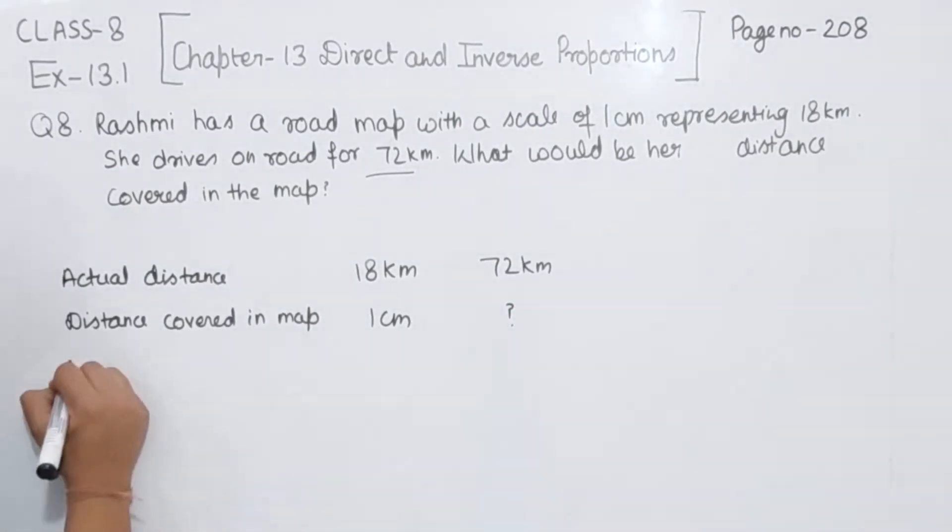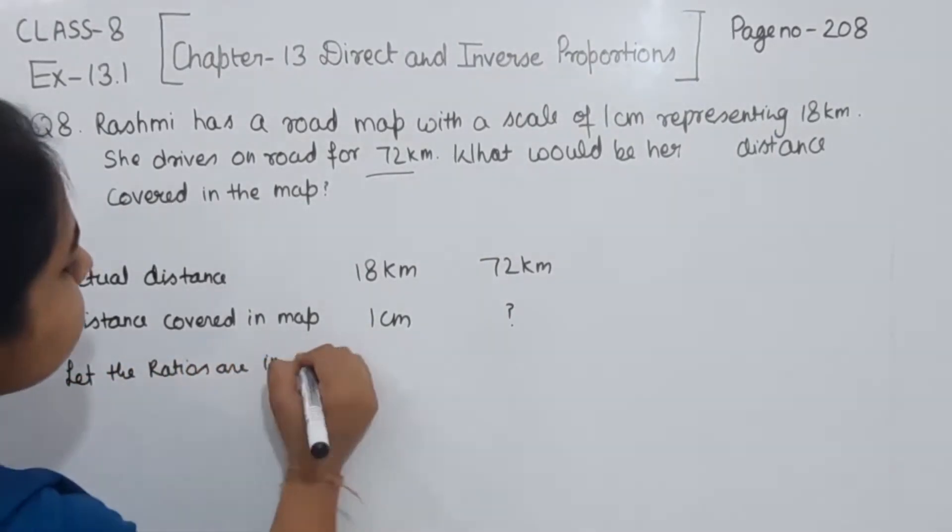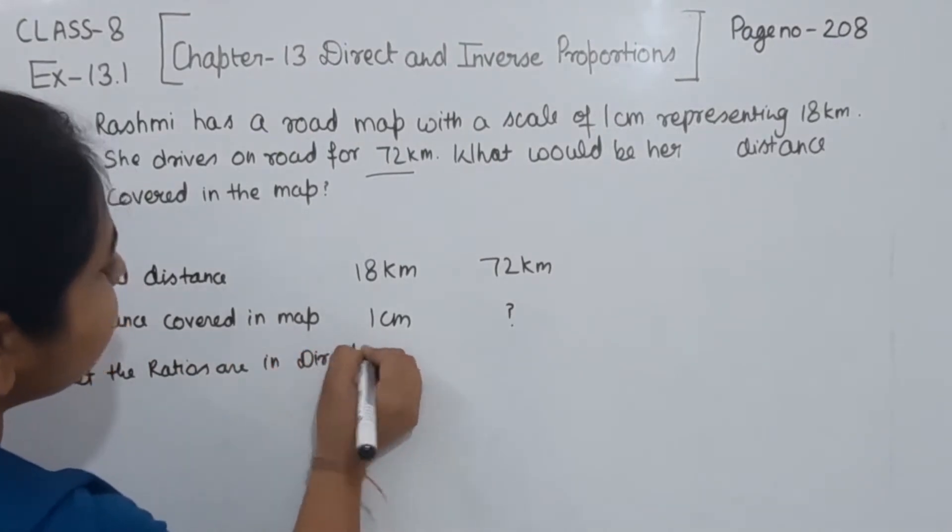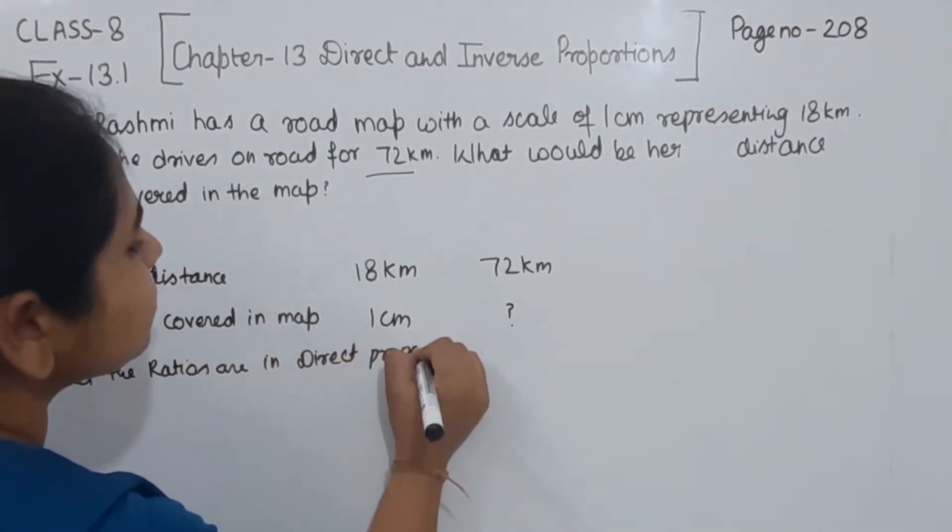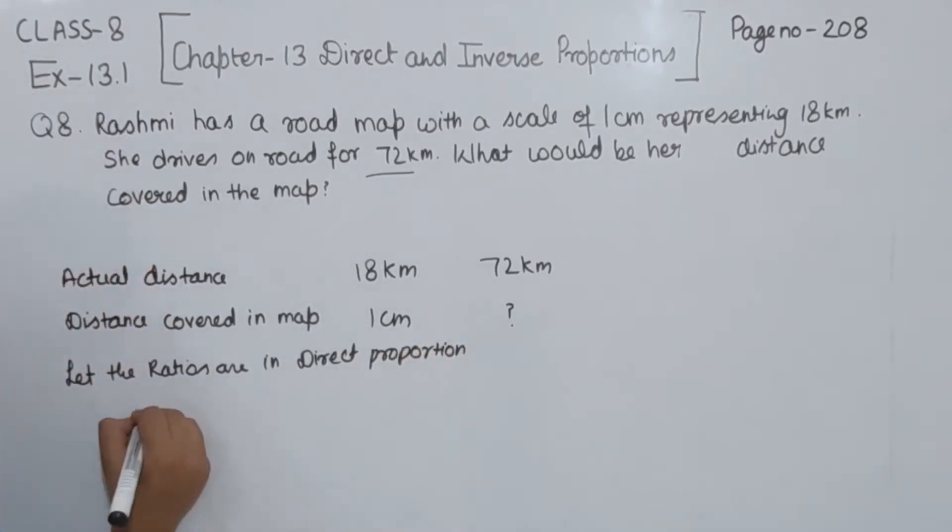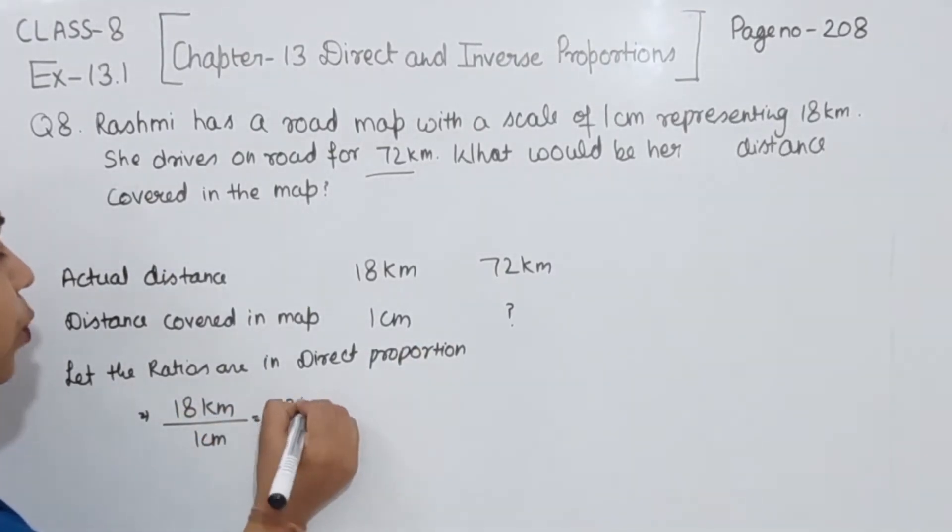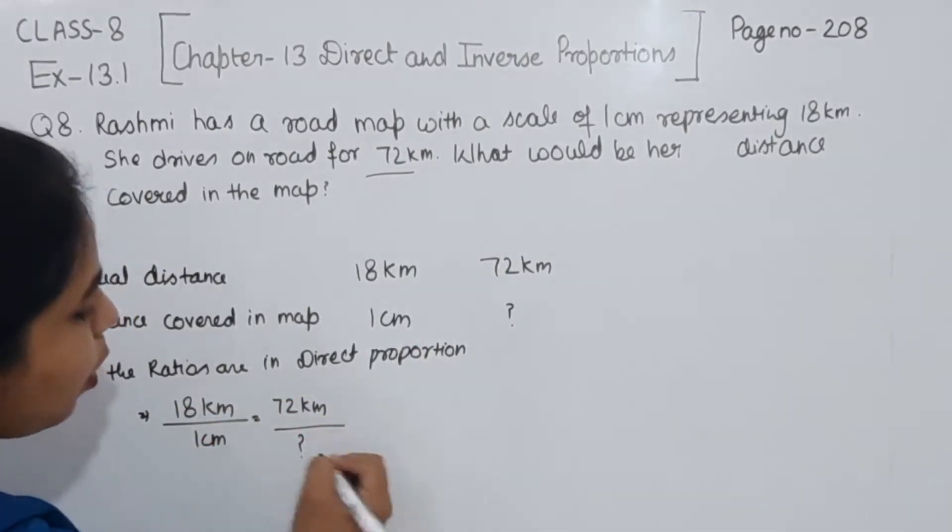Now I am going to write here, let the ratios are in direct proportion. So I am going to write here, 18 km is representing 1 cm, then 72 km represent how much cm.